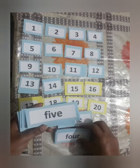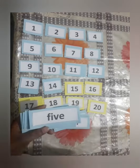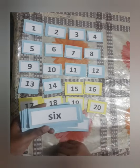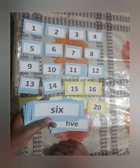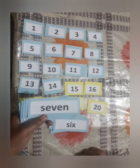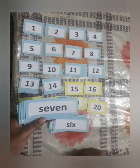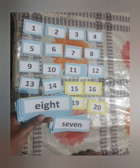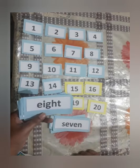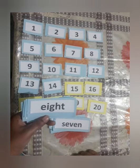Spelling of 5: F, I, V, E — Five. Number 6: S, I, X — Six. Spelling of 7: S, E, V, E, N — Seven. Number 8: E, I, G, H, T — Eight.